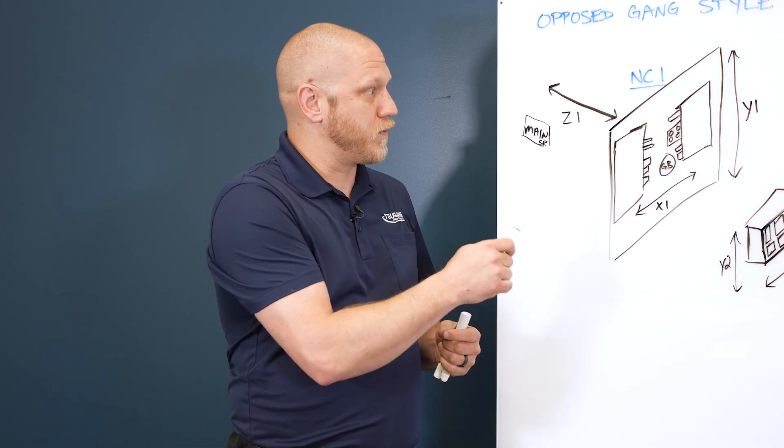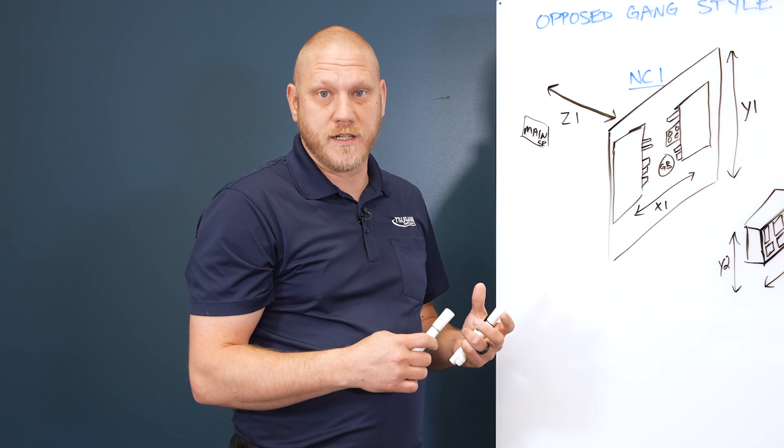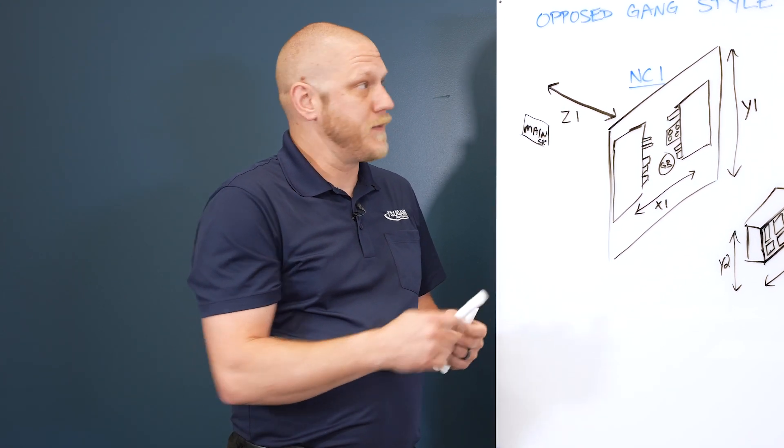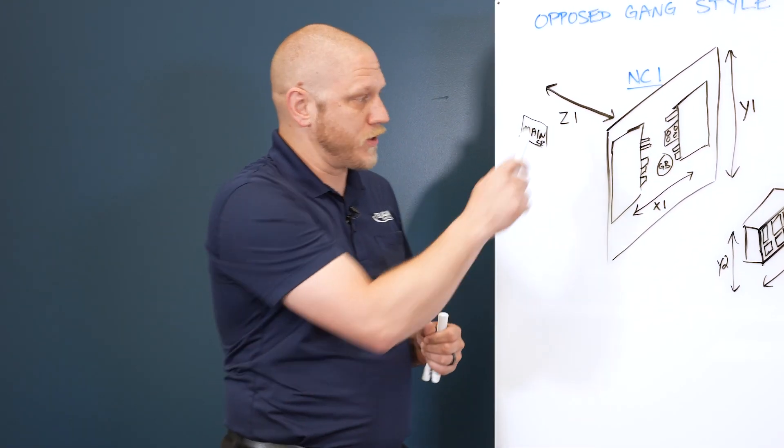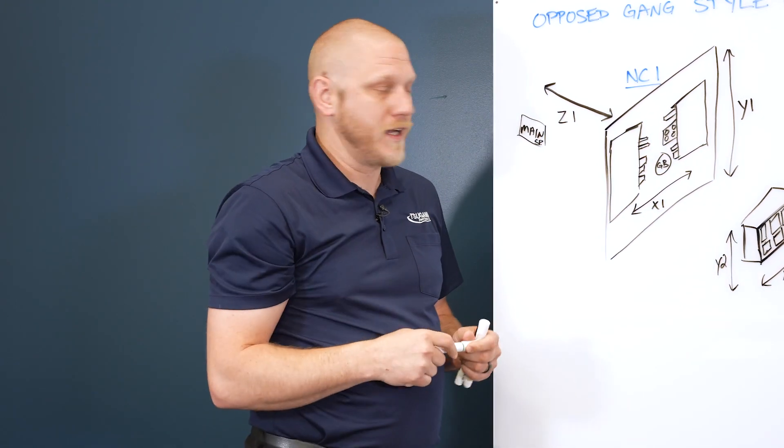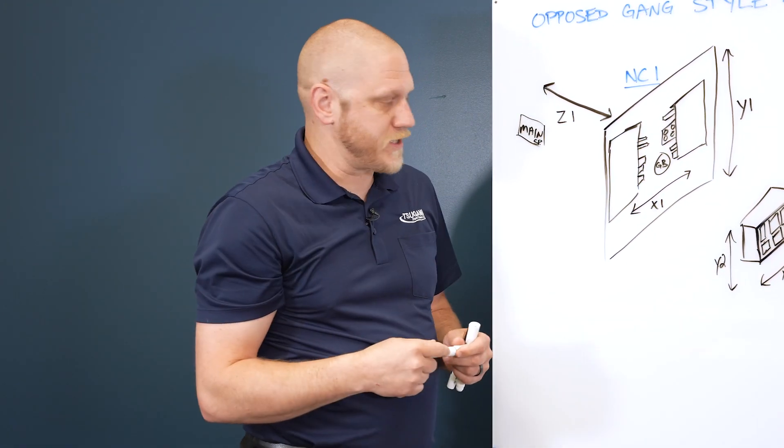So I wanted to go over and explain a typical Swiss machine two-path control. This is an opposed gang style Swiss machine. Pardon the rudimentary drawing here, but I think everybody would get the gist of this.